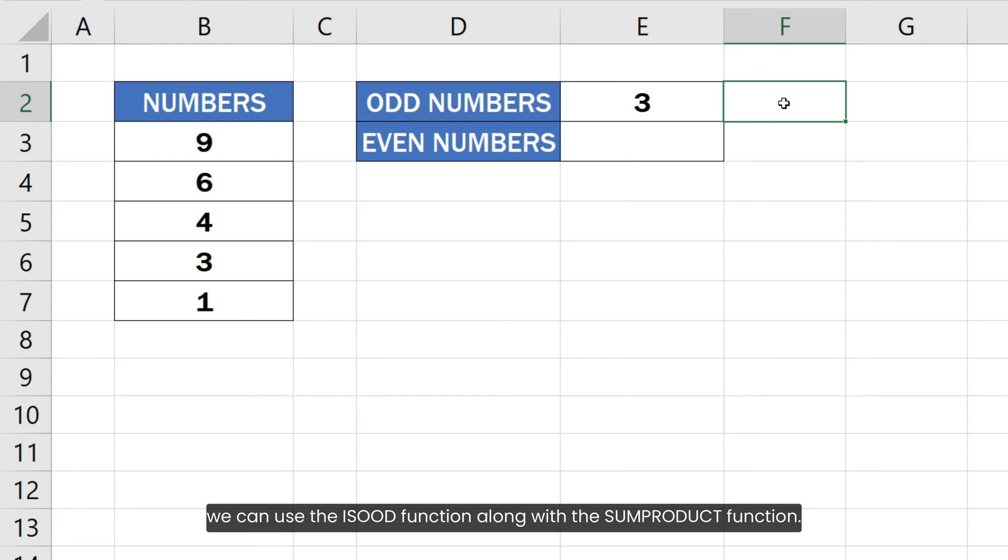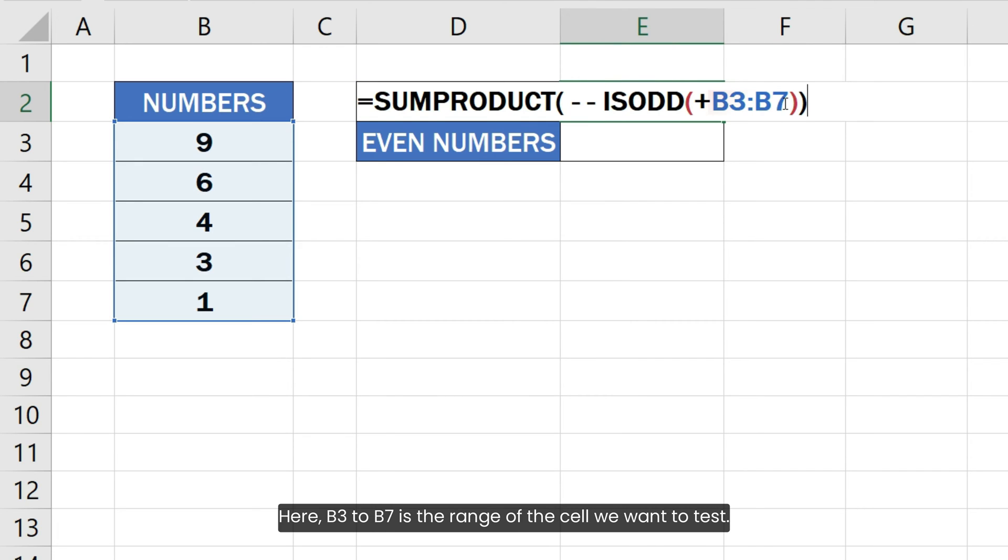we can use the ISODD function along with the SUMPRODUCT function. Here is the formula to do that. Here B3 to B7 is the range of the cells we want to test. It is passed as an argument to the ISODD function.